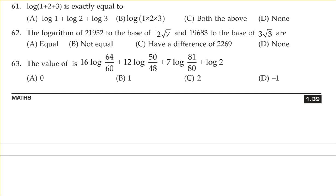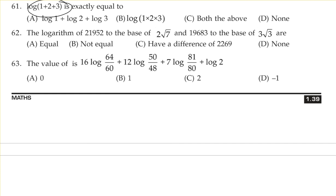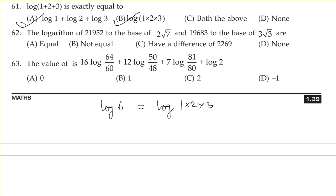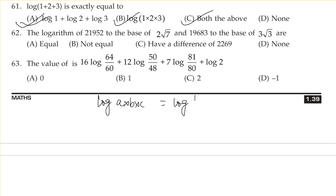Okay, log(1 + 2 + 3) is exactly equal to — let me tell you a few things. Log(a + b + c) — we don't have a formula for this. But by chance in this particular question, 1 + 2 + 3 = 6, so the question is about log 6. And by chance 1 × 2 × 3 is also 6. So this is true by default and this is true by formula, so both A and B are true. But otherwise we never have log(a × b × c) equal to log(a + b + c) — never ever.